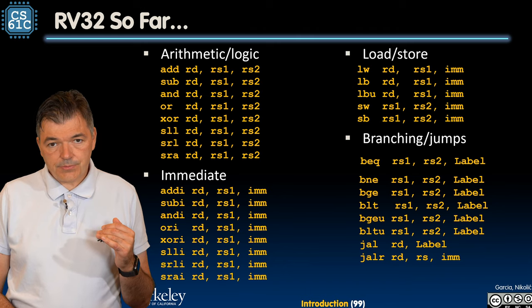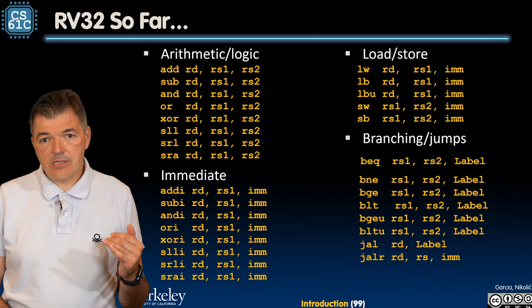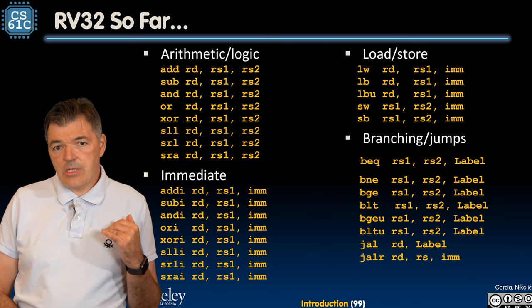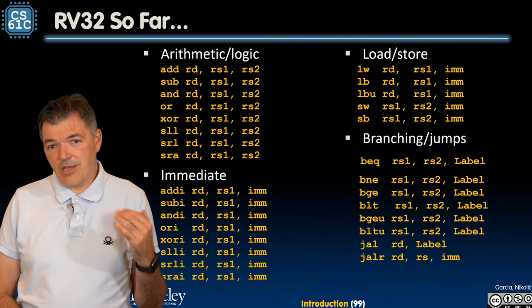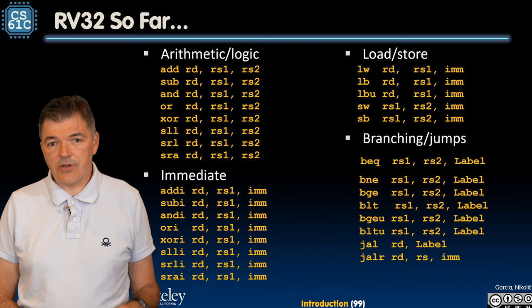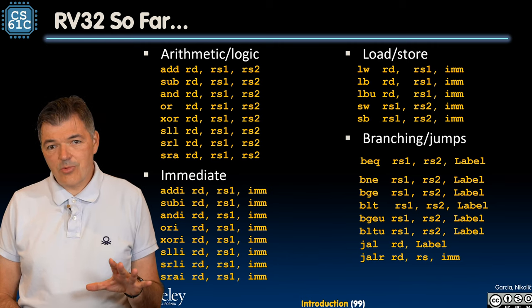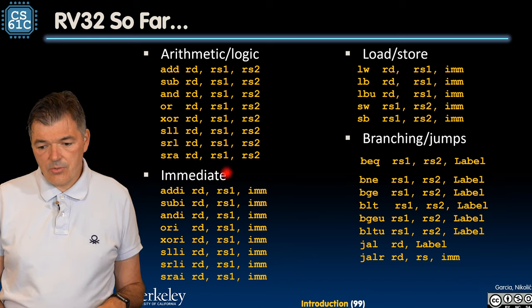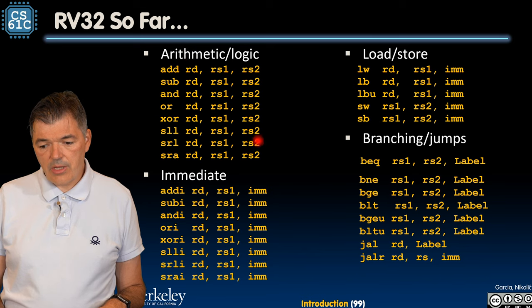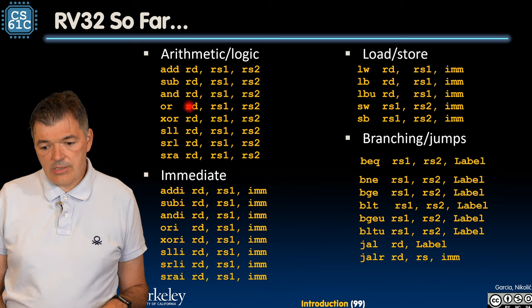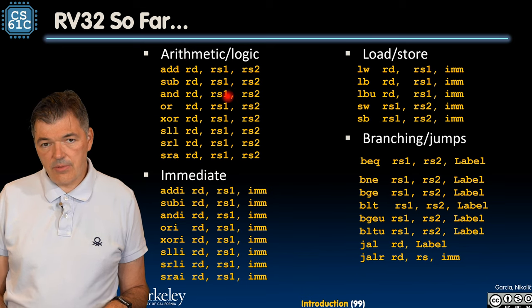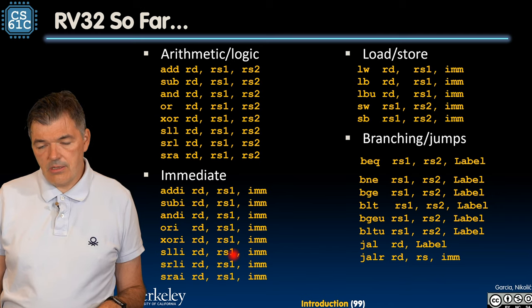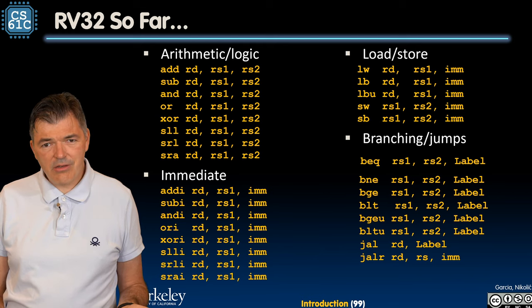When we presented these assembly instructions, we did them in a particular order. We're going to see that in the next module we are going to be grouping them a bit differently. And in this list we are showing a glimpse of that. So when we look at this grouping, I've organized register-based arithmetic logic instructions in one group and then immediates in another group. Do you see something there that is similar?